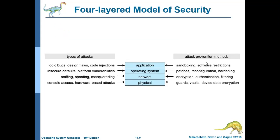The four-layered model of security includes physical, network, operating system, and application. For the application layer, types of attacks include logic bugs, design flaws, and code injection — an attack that modifies otherwise well-behaved executable code.